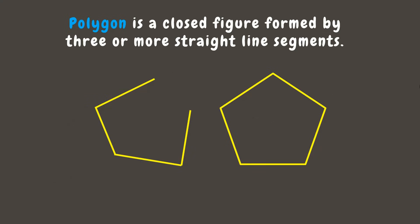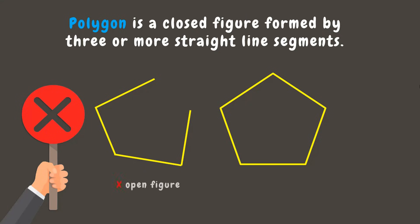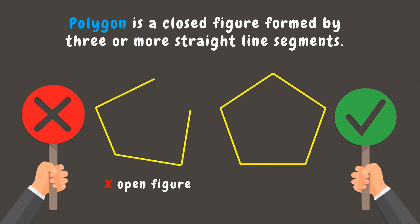Now let's take a look at these two figures. Can you tell me which one is a polygon and which one is not? The first figure is not a polygon since it is an open figure, while the second one is a polygon since it is a closed figure with straight line segments.